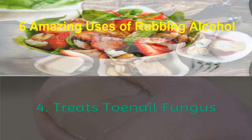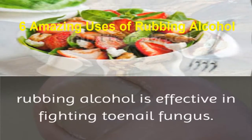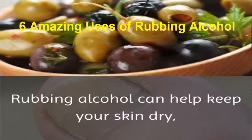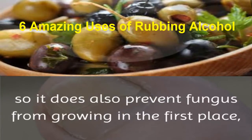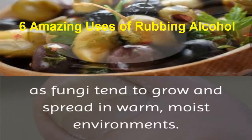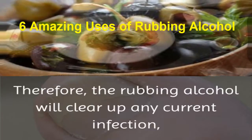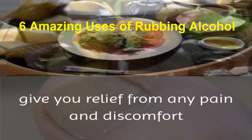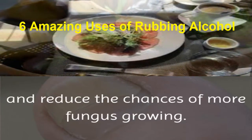4. Treats Toenail Fungus. Because of its ability to fight germs and infections, rubbing alcohol is effective in fighting toenail fungus. Rubbing alcohol can help keep your skin dry, so it also prevents fungus from growing in the first place, as fungi tend to grow and spread in warm, moist environments. Therefore, the rubbing alcohol will clear up any current infection, give you relief from any pain and discomfort, and reduce the chances of more fungus growing.